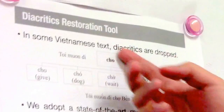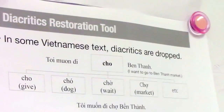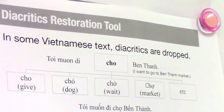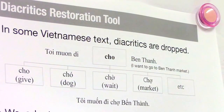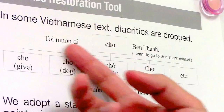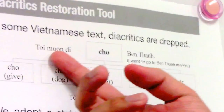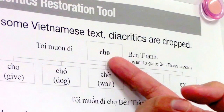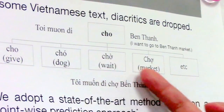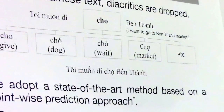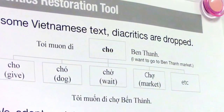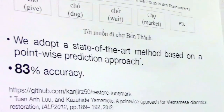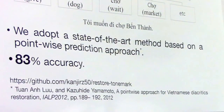We have also developed a diacritics restoration tool. Diacritics means tone marks. In some Vietnamese texts, diacritics are dropped, and when diacritics are dropped, the sentence has a lot of ambiguity. For example, 'Toi mon li cho ben taim' is a diacritics-dropped sentence, meaning 'I want to go to Ben Taim market.' The word 'cho' has ambiguity and can mean gift, dog, wait, or market. For Vietnamese text analysis, we must pre-process to restore diacritics marks. We adopted a state-of-the-art method for restoration, and as a result, our analyzer achieves 83% accuracy.